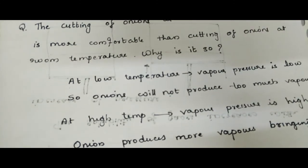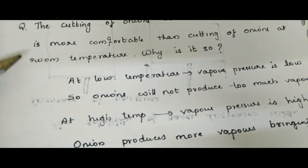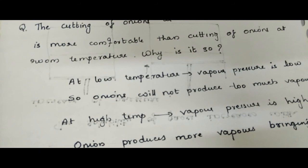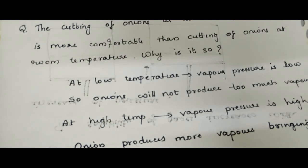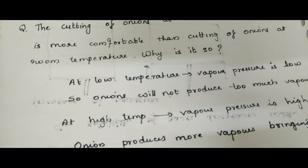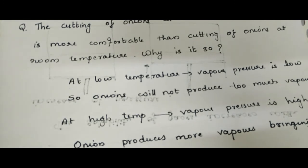Here is one more question: why is cutting onions at lower temperature more comfortable than cutting onions at room temperature? At lower temperature, the vapor pressure is low, so the onion will not produce too many vapors. At room temperature, vapor pressure is high, so more vapors are produced, bringing tears when cutting onions. In the next section, we will solve some numericals related to this part. Thank you.